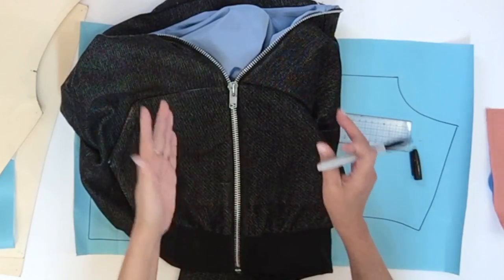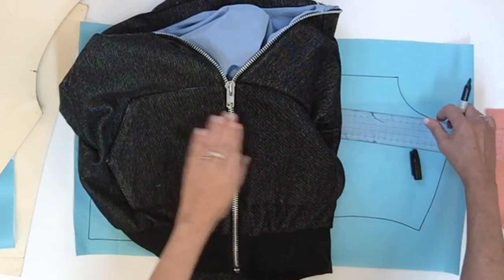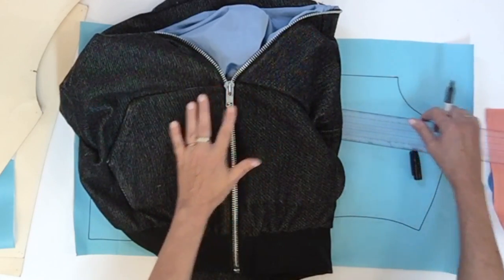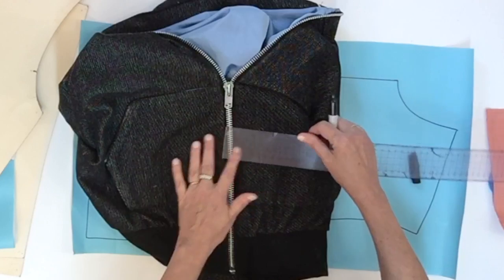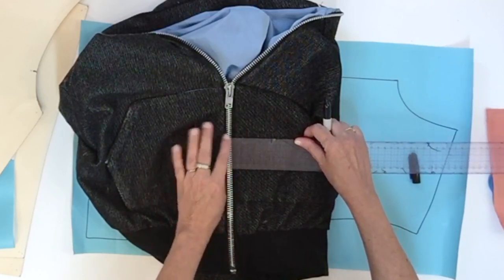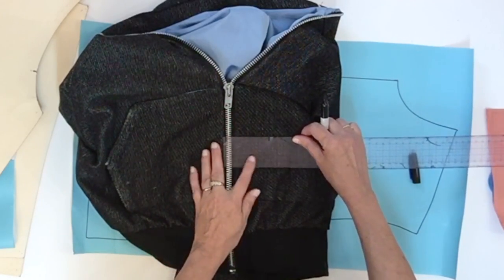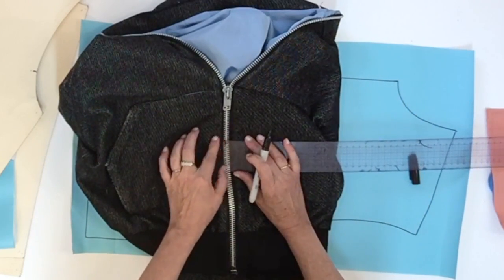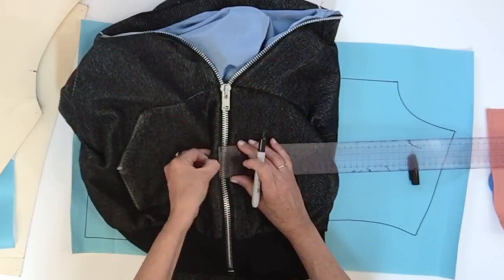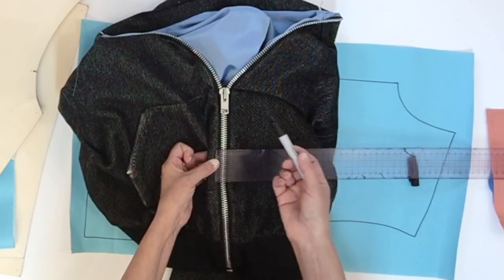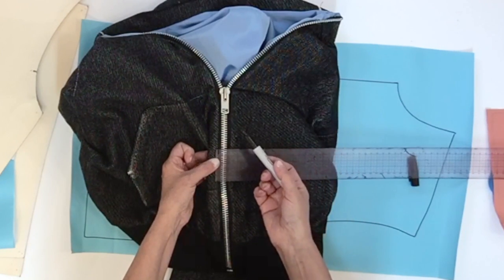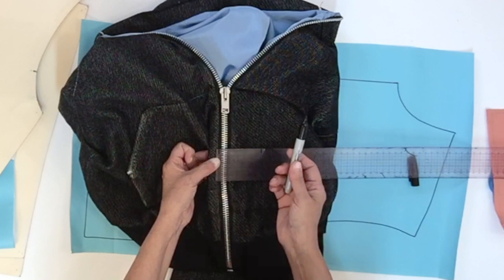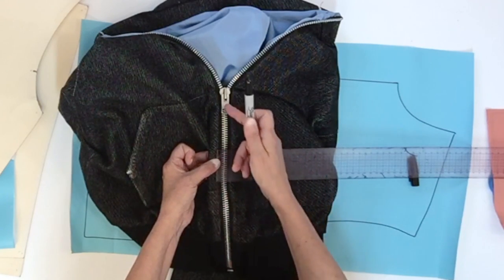Before doing the pocket, I want to make a precision about the apparent zipper. When you have any apparent zipper, you have to measure what's going to show from the zipper and then remove from your bodice half of the distance that you have fabric to fabric. When you have a very narrow zipper it doesn't matter that much, but when you have a wider zipper just like this one,